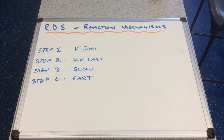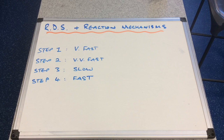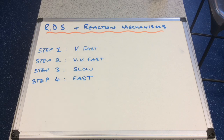A couple of analogies: if you've heard the phrase 'a chain is only as strong as its weakest link' — you could have a chain made of high tensile steel, but if one link is made of paper, the chain is only as strong as the paper. Similarly, a relay team's overall performance is governed by the speed of the slowest member. So the rate determining step is the slowest step in a reaction mechanism.